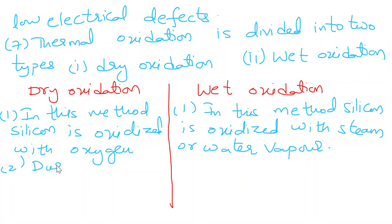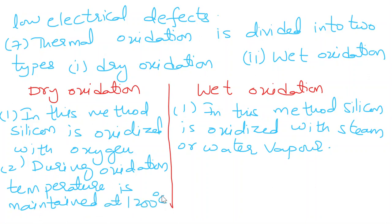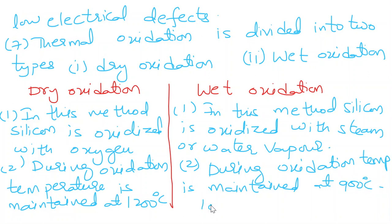In this dry oxidation, during oxidation, temperature is maintained at 1200 degrees Celsius. Here, during oxidation, temperature is maintained at 900 to 1000 degrees Celsius.